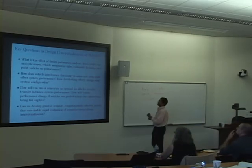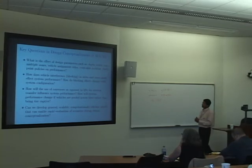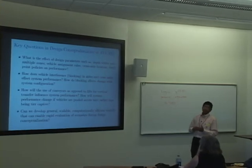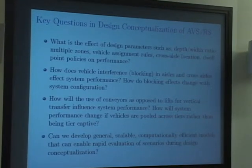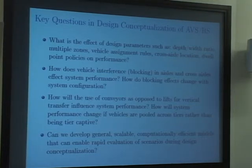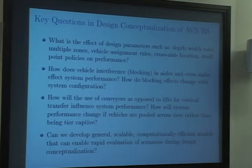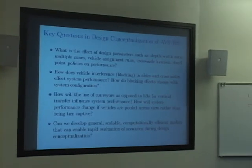The rest of the presentation is essentially going to answer four key questions related to the design conceptualization of AS/RS systems. The first question: what is the effect of design parameters such as depth-to-width ratio, multiple zones, vehicle assignment rules, cross-aisle location, and dwell-point policies on performance? The second question is, what is the effect of vehicle interference or blocking in aisles and cross-aisles on system performance? The third one looks at different mechanisms for doing vertical transfer, whether it is conveyors or lifts. And the last question ties all of this together, saying, can we develop general, scalable, computationally efficient models that can allow us to rapidly evaluate different configurations or scenarios during the design phase? So progressively, I'm going to try and answer each one of these questions, and I'll give you some examples of the kinds of models we build and the kinds of understanding we get.